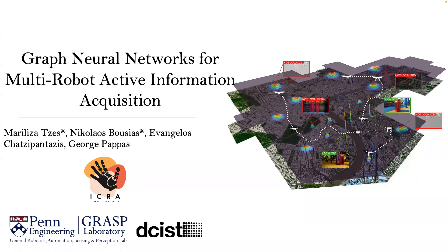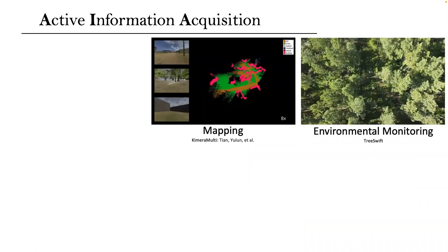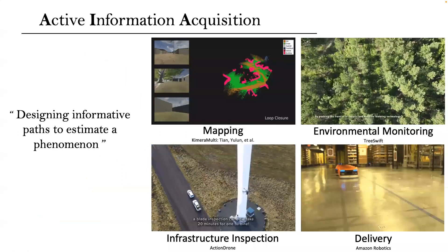We present our paper on graph neural networks for multi-robot active information acquisition. Swarms of collaborating robots have been deployed to semantically map unknown environments, monitor deforestation or wildfires, inspect critical infrastructure, or coordinate warehouse operations.